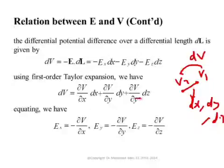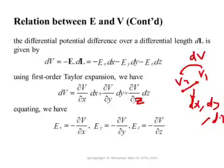Equating the Taylor expansion to the expression from the definition of voltage, we see that E_X equals minus ∂V/∂X, E_Y equals minus ∂V/∂Y, and E_Z equals minus ∂V/∂Z. Note there is a typo in the last term — it should be Z. This confirms that the electric field is indeed equal to the negative gradient of the scalar potential. If you know the scalar potential, the gradient operator gives you the electric field, and this applies in cylindrical and spherical coordinates as well.